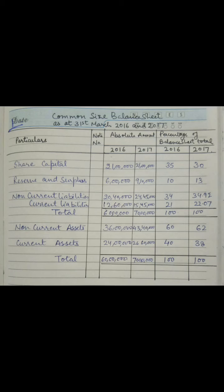Reserve and surplus: the amount is 6 lakhs for 2016 and 9 lakhs 10 thousand for 2017. Non-current liabilities are 20 lakhs 40 thousand for 2016 and 24 lakhs 45 thousand for 2017. Current liabilities are 12 lakhs 60 thousand and 15 lakhs 45 thousand for 2016 and 2017 respectively. Adding all liabilities, the totals come to 60 lakhs and 70 lakhs.